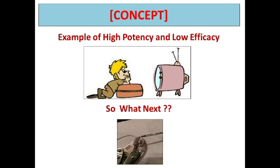To understand why we combine imipenem — the prototype antibiotic in this class — with cilastatin, consider this analogy: a boy with high IQ who is quite intelligent is losing all his capacity, all his potency, watching television. The efficacy as far as outcomes — academics or any other outcome in his life — is concerned is a failure. High potency but low efficacy, because his energy is being lost to something else.